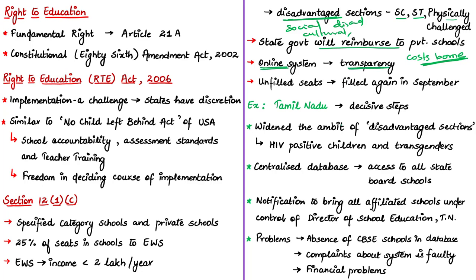RTE rules in several state governments state that unfilled seats during academic year admissions can be filled again in the month of September. But so far, state governments have no clear and visible public announcements regarding this matter. In this discussion, the authors give the example of Tamil Nadu regarding the implementation process.